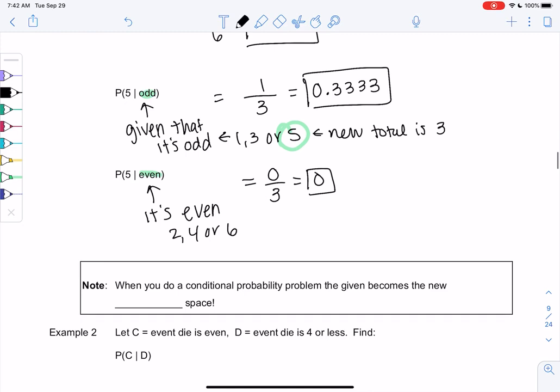So anytime we do a conditional, the given is now my new sample space, which essentially means the given is the new total.